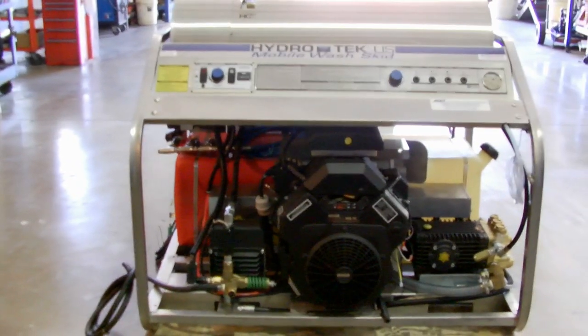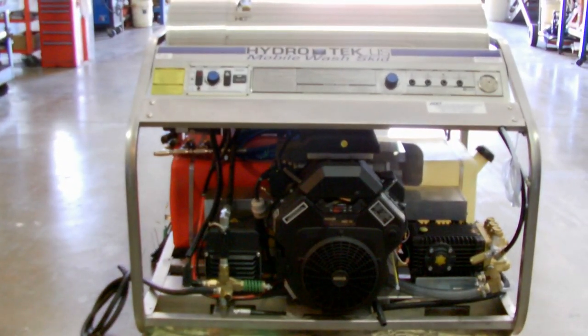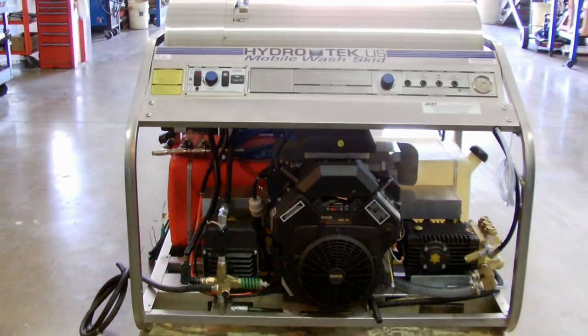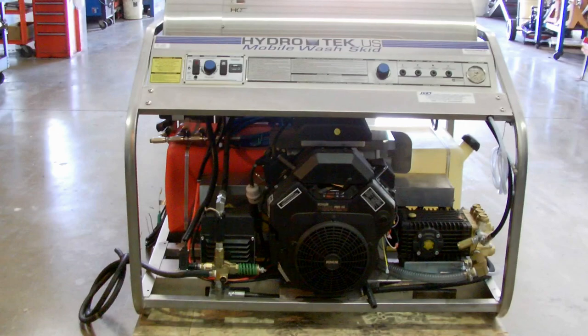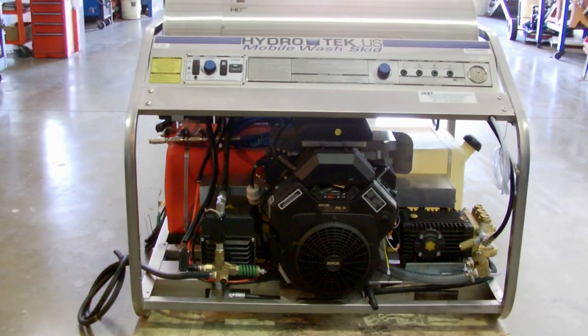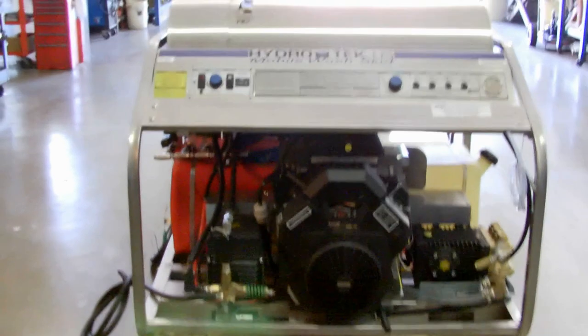This is the new Hydratec SCU-3500-9K ICE, 30 horsepower hot water pressure washer. It puts out 3500 PSI at an amazing 9 gallons per minute.